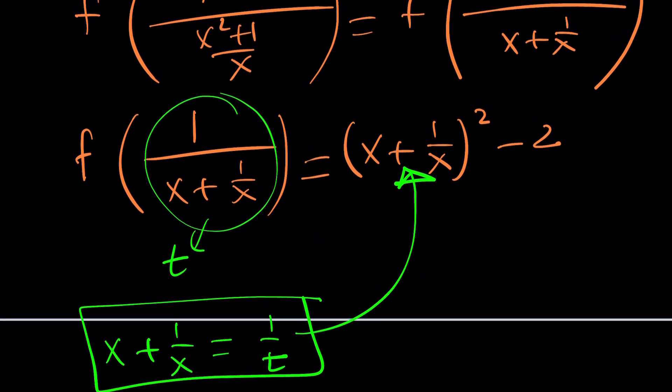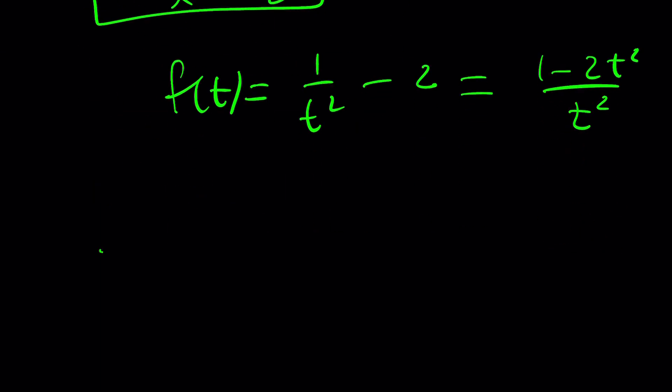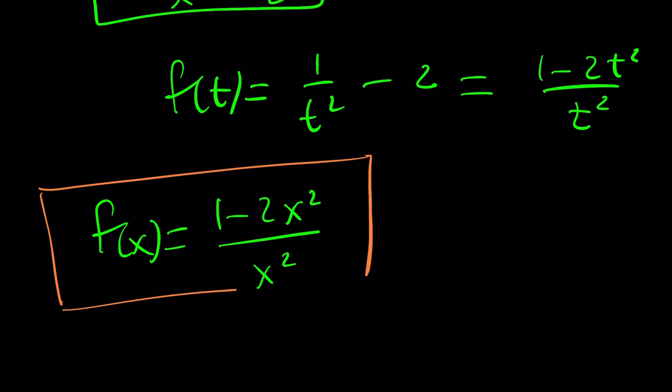And that would be just simply 1 minus 2t squared divided by t squared. Now, you might be questioning, like, why didn't we get something simple from the first method? I probably made a mistake somewhere, or I just didn't simplify it the way I should be doing that. So, anyways, you'll let me know what you think because I want you to really work it out and find out the same answer using the very first method.